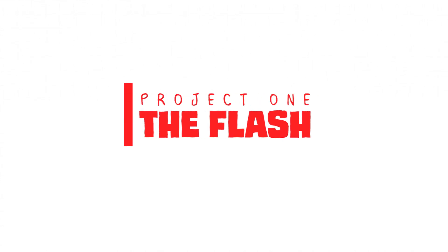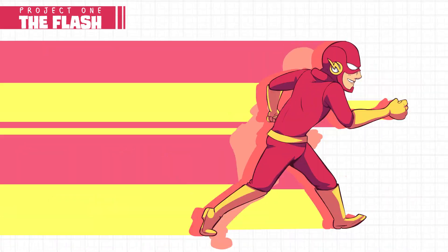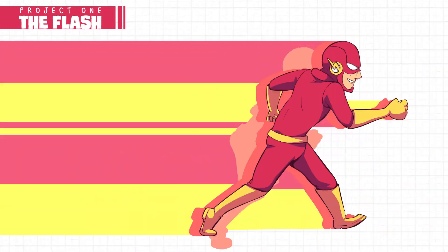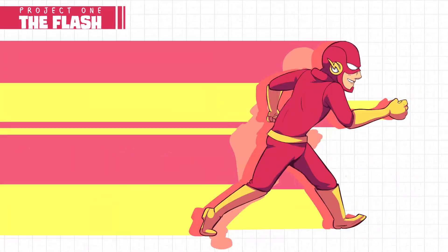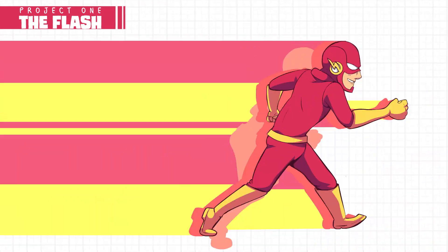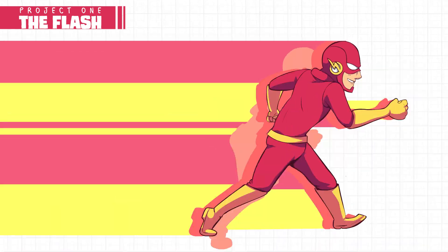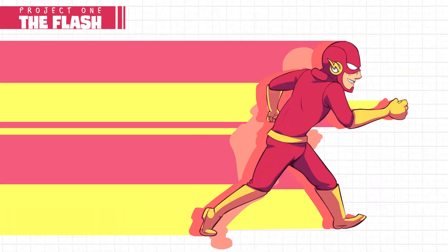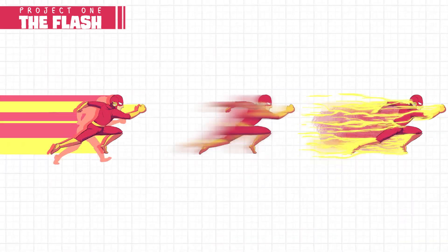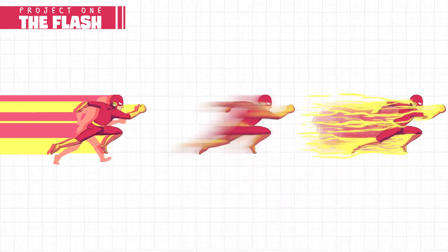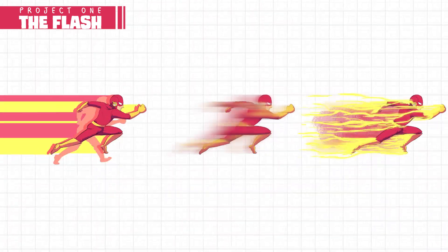First up is a short animation loop of The Flash. The design is a mix of his appearance in the CW's Arrowverse, while bringing in a bit more of the yellow from his classic look. I also decided to try out a couple of different visual effects to showcase his speed, such as afterimages, lightning, and a good old-fashioned blur.